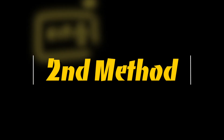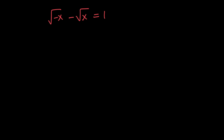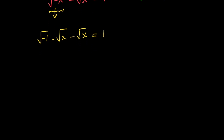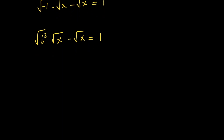Now let's talk about the second method. Let's go ahead and rewrite the original equation: the square root of negative x minus the square root of x equals 1. In the second method, I'm going to use the identity that i squared equals negative 1. So I can say that the square root of negative x is the same thing as the square root of negative 1 multiplied by the square root of x. I can replace negative 1 with i squared, and then pull out the square root of x on the left-hand side, giving us the square root of x times the square root of i squared, which is positive or negative i, minus 1 equals 1.